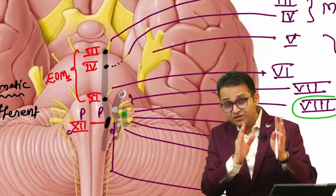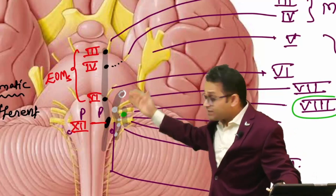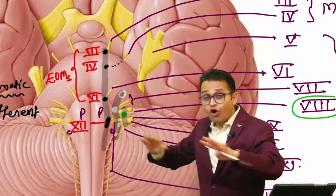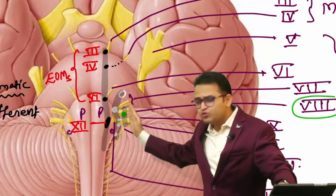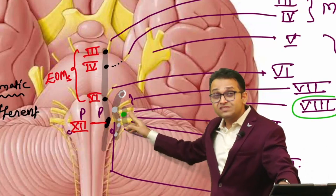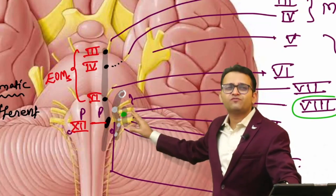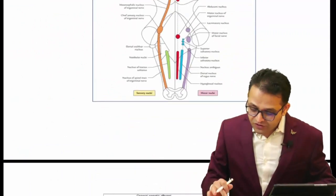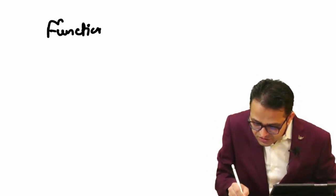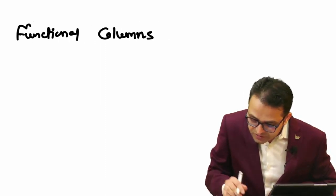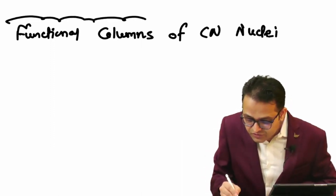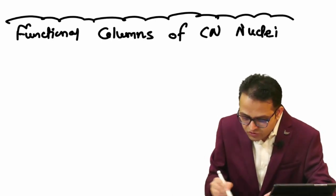Anatomy means 'ana' - to observe, and 'tomy' - cutting. You are cutting and observing. These cranial nerves are not arranged haphazardly - there is a particular arrangement. God created our body beautifully. The eighth cranial nerve has the special function of hearing and is located on the lateralmost side. So we are going to look at our functional column of cranial nerves - we are talking about the nuclei, not the cranial nerves themselves. Cranial nerves are axons.